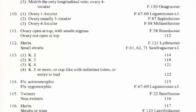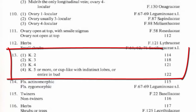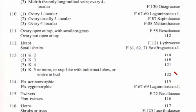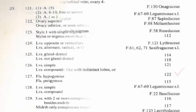At step 113, there is another question: K means calyx, that is the sepals, and there are four options. In this case the calyx is five or more. We had five sepals, and that takes us to step 122.